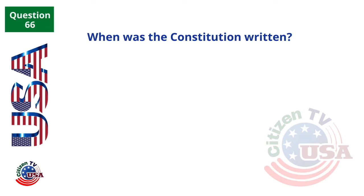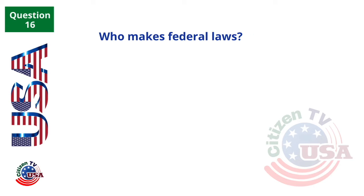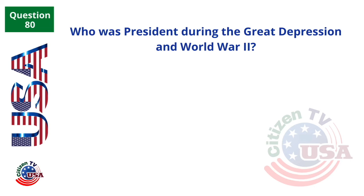When was the Constitution written? 1787. Who makes federal laws? Congress. Who was president during the Great Depression and World War II? Franklin Roosevelt.